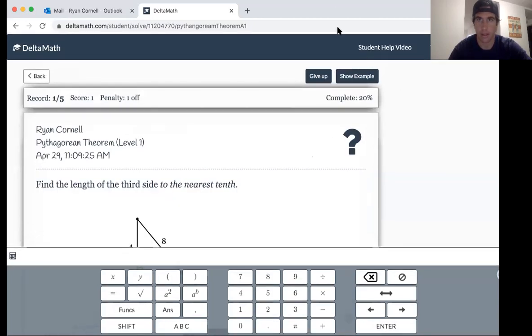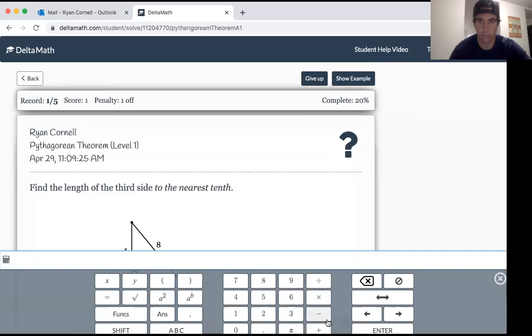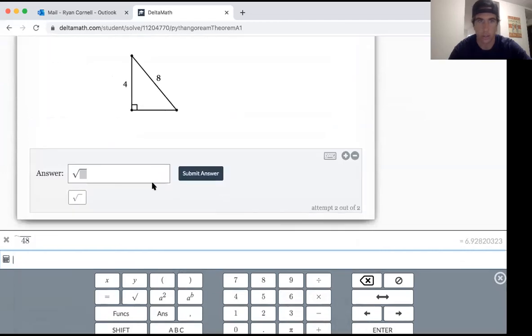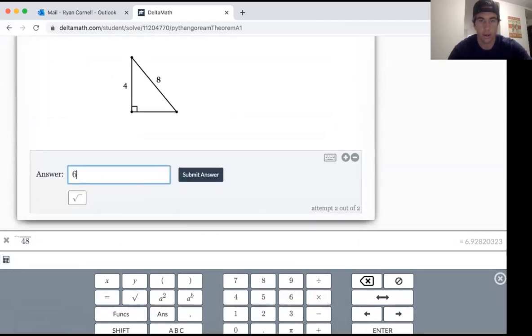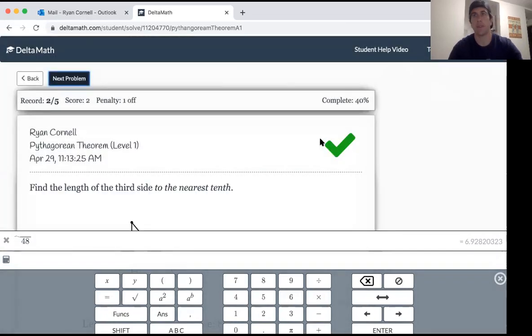So you're going to find the calculator again, guys. It's right here. Hold it up and take the square root of 48, and you get 6.92, so it's 6.9. All right, that's it.